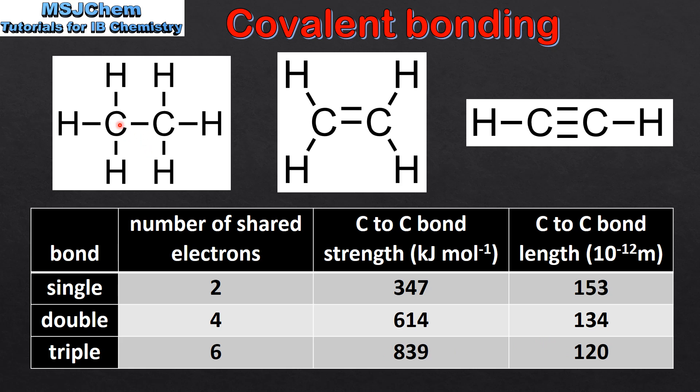So the carbon to carbon bond in ethane is the weakest and the longest, and the carbon to carbon bond in ethyne is the shortest and the strongest.